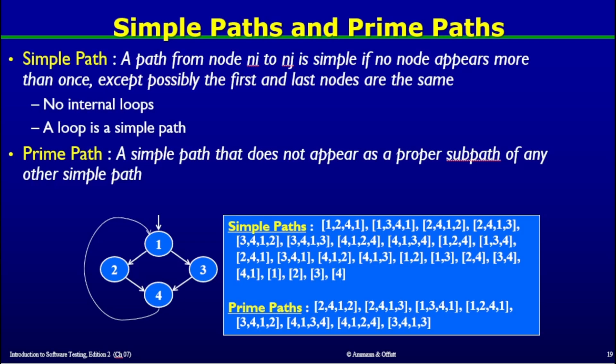In the last video we discussed about the problems due to loops in the graph of a program. Now I am going to discuss how the problem of loops can be overcome by a very elegant strategy, which is called prime path coverage. To understand the concept of a prime path, first we need to know what a simple path is.